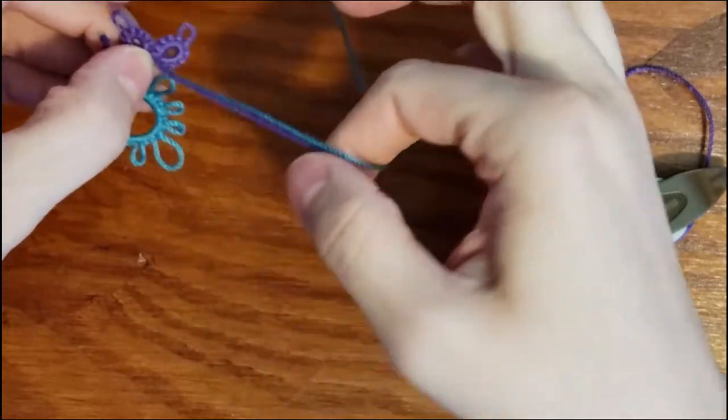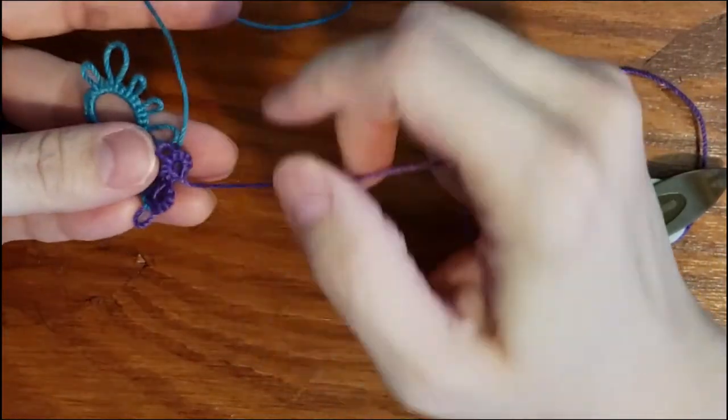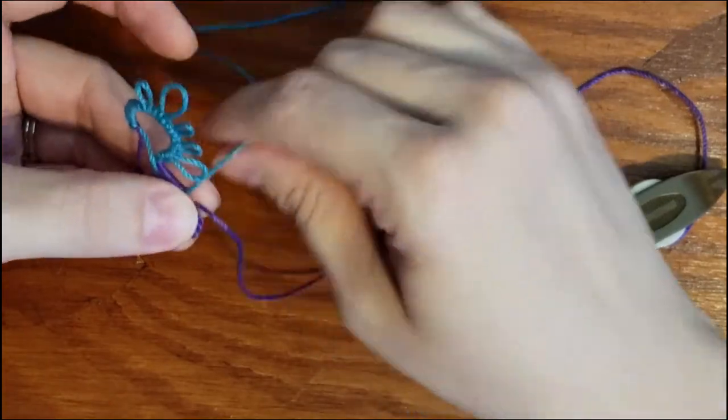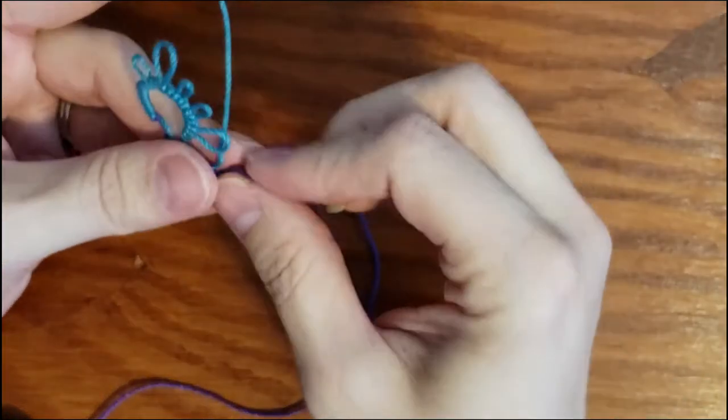So I've taken my work from the last video, which was the rings, and I'm just going to reverse my work. So now the rings are being held upside down in my hand, and I'm going to take my other color, my teal here, and I'm going to use that for my ring.